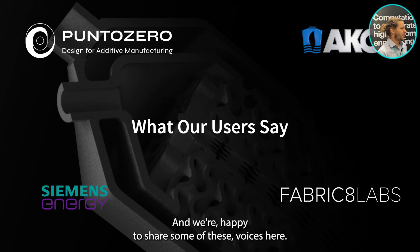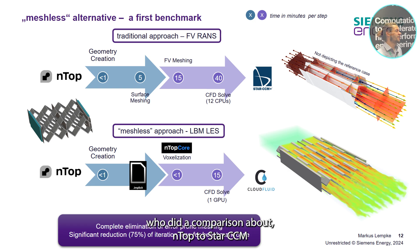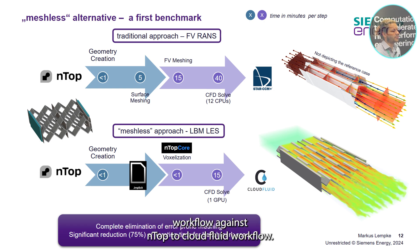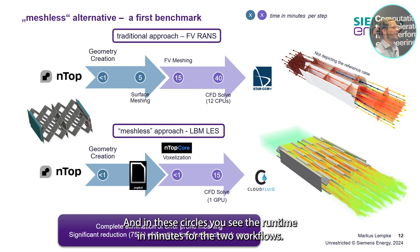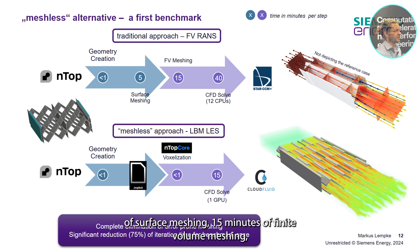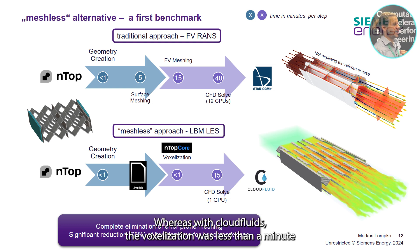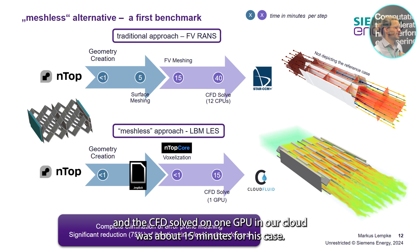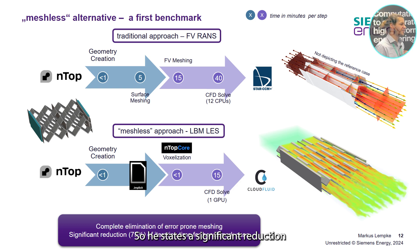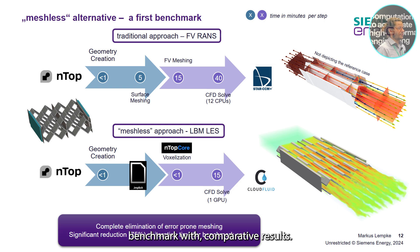What do our users say? Markus Lemke from Siemens Energy did a comparison of the NTOP-to-StarCCM workflow against the NTOP-to-CloudFluid workflow. In the benchmark, NTOP to StarCCM required about 5 minutes of surface meshing, 15 minutes of finite volume meshing, and 40 minutes of CFD solve on 12 cores. With CloudFluid, voxelization was less than a minute and the CFD solve on one GPU in our cloud was about 15 minutes. He states a significant reduction of about 75% in iteration time with comparative results.